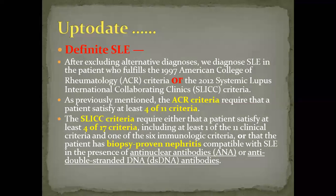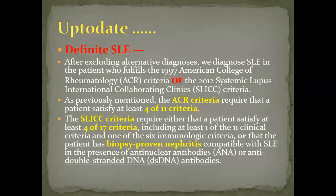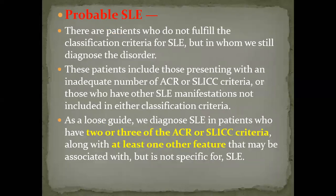Definitive lupus means fulfilling four out of 11 ACR criteria, or four out of the SLIC criteria with at least one clinical and one immunologic, or biopsy-proven lupus nephritis with positive ANA or anti-double-stranded DNA. If a patient does not fulfill any of these three definitive criteria but has only two or three ACR or SLIC criteria with at least one other associated feature, they are classified as probable lupus.